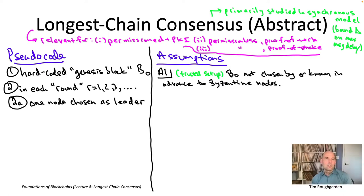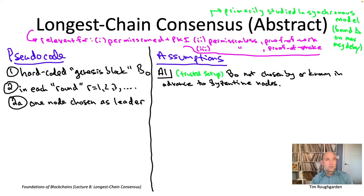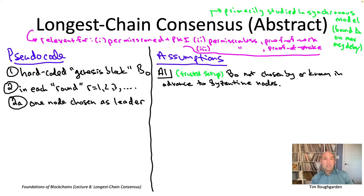An analogy helps here. Way back in our first lectures, we introduced the ideal signatures assumption — that digital signature schemes exist such that signatures are unforgeable on messages you haven't seen, unless you know the appropriate private key. We asserted that assumption, then investigated what cool things we could do, like the Dolev-Strong protocol. Separately, we asked how to implement it so the assumption is actually true in practice — using well-known secure digital signature schemes like ECDSA.